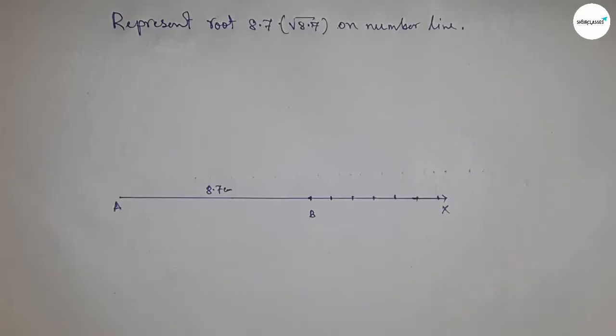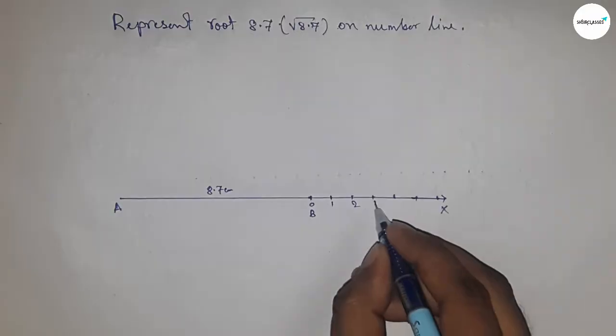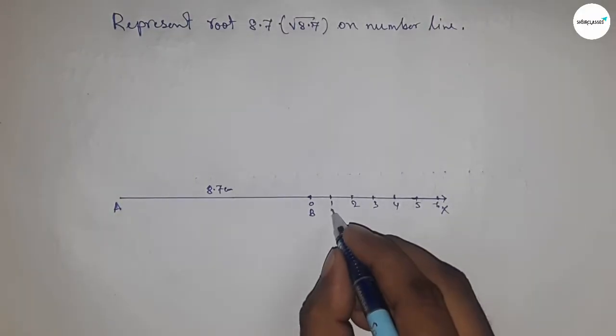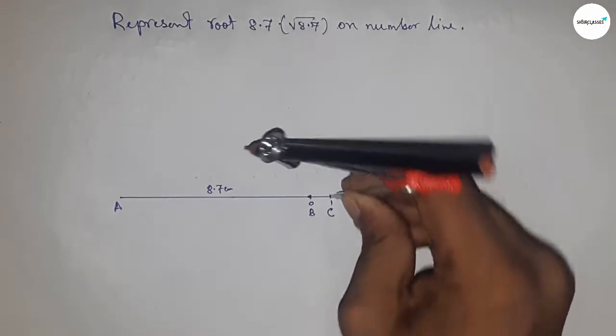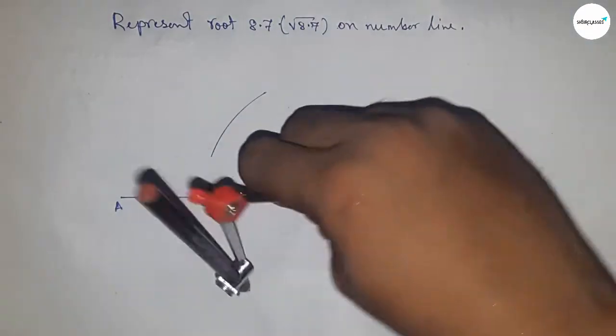Mark 0, 1, 2, 3, 4, 5, 6 and so on, taking point C here. Next, bisect the line AC by taking greater than half of AC and drawing arcs.